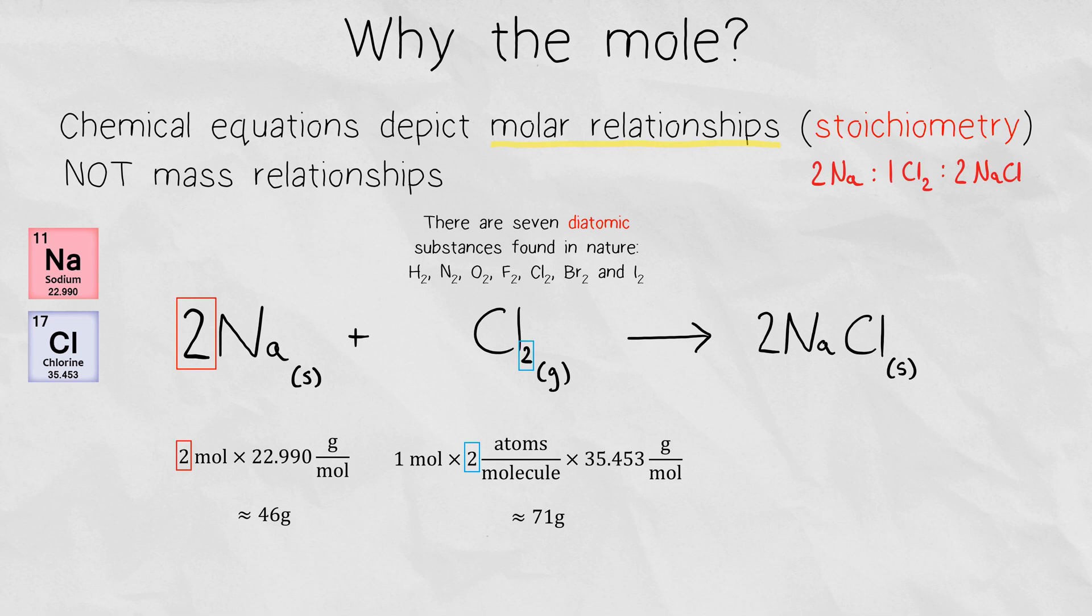Now notice how the stoichiometry is 2 sodium for 1 chlorine gas, a ratio of 2 to 1, but that is not reflective at all when it comes to the mass values that we're seeing. So this actually shows us that the molar ratio and the mass ratio are 2 different things, and to never assume that they're the same thing. So always remember that the coefficient in a chemical reaction is the molar coefficient.